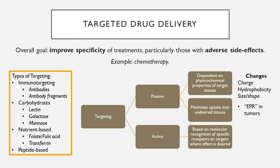There are two targeting categories. Passive targeting makes use of the physicochemical characteristics of the drug or tissue — size, charge, hydrophobicity — that attract it to a particular site. A classic example is the enhanced permeability and retention (EPR) effect in tumors, where tissues are more porous and leaky than others. Particles between 100 nanometers and one micron tend to accumulate in tumors, so loading toxic chemotherapy drugs into such particles creates a passively targeted system.